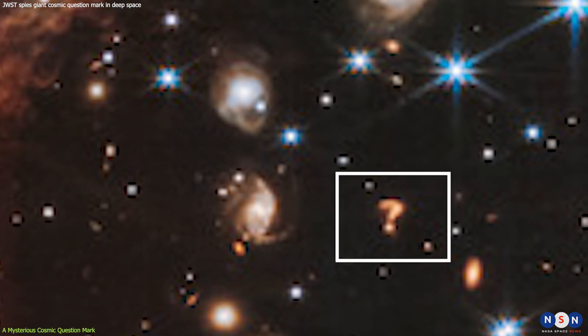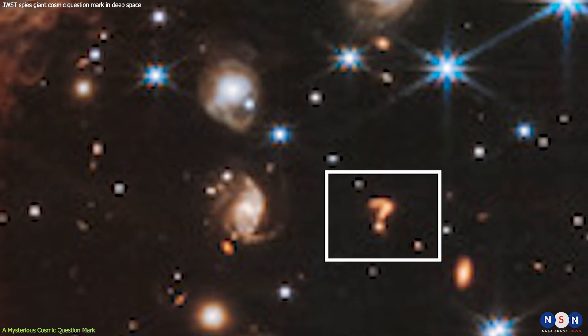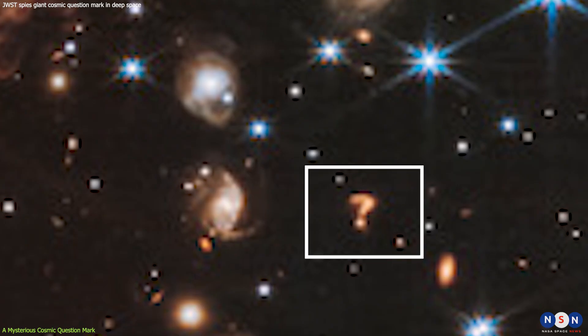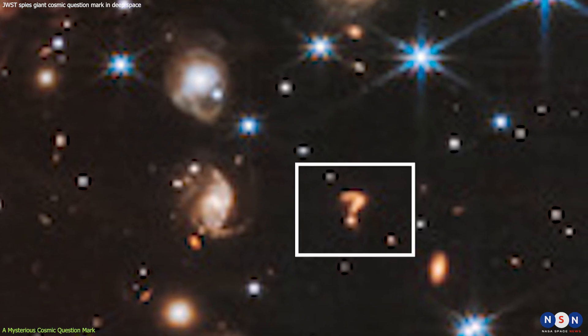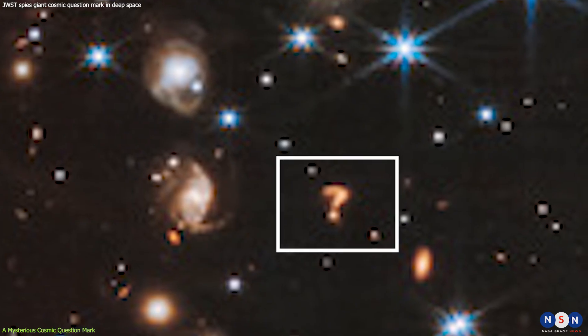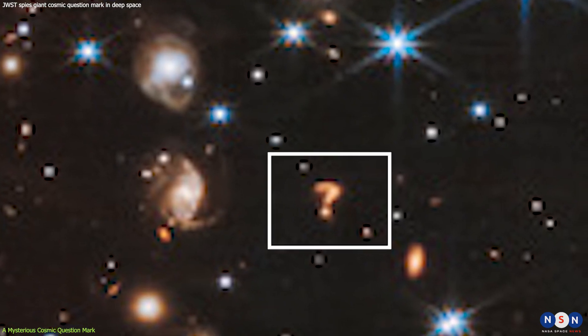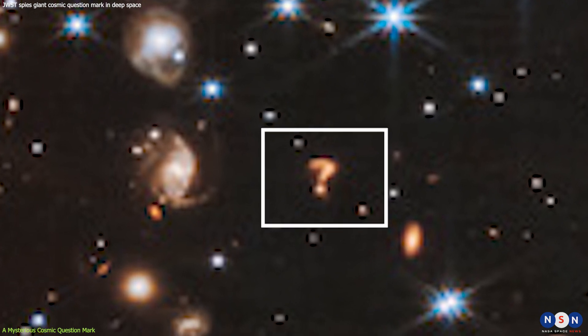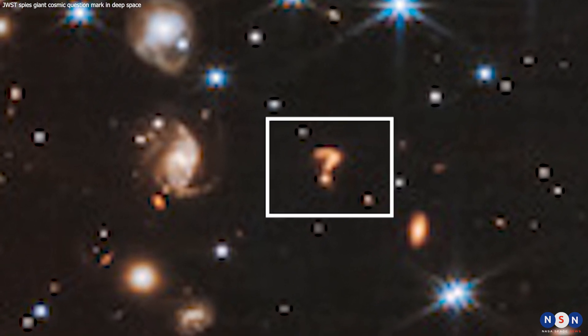The tail may be another image of the same background galaxy, stretched and curved by another clump of dark matter along the line of sight. If this is true, then this galaxy may provide us with a rare opportunity to map the distribution and shape of dark matter in galaxy clusters. This could help us test different theories and models of dark matter, and its role in galaxy formation and evolution.